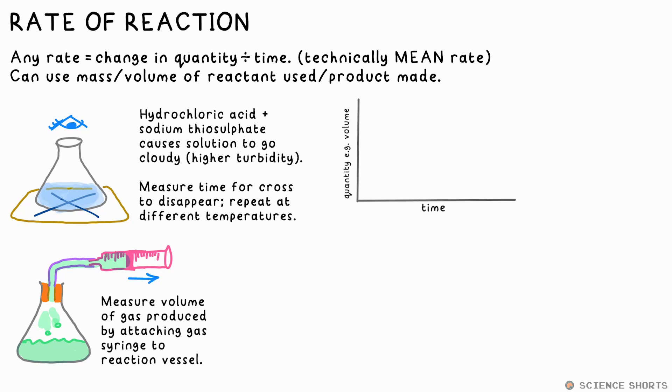A graph to show this would have the quantity on the y-axis and time on the x-axis. It's usually a curve that starts off steep but then levels out or plateaus, which shows that the reaction has completed, or we can say reached its end point. To find the rate at any time, you draw a tangent at that point and find the gradient.